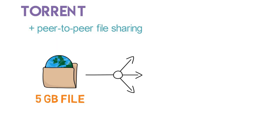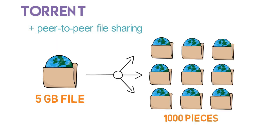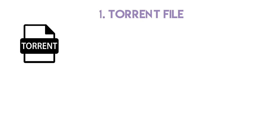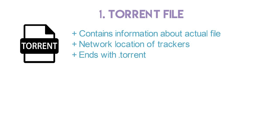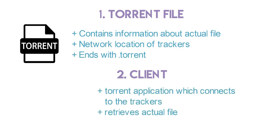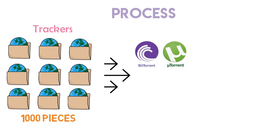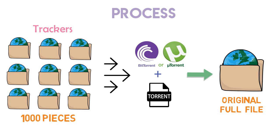In torrent, the same 5GB file is divided into many pieces — assume about a thousand pieces of 5MB each. Those pieces are sent to a thousand different users or servers who are called trackers. To download that file, you need two things: one, a torrent file which ends with .torrent, which contains information about the actual file and the network location of the trackers. Another thing is a client — a torrent application which connects to the trackers and retrieves data, for example, µTorrent, BitTorrent, etc. The client, with the help of the torrent file, downloads the actual file from pieces and arranges them in sequence to get a complete 5GB file.